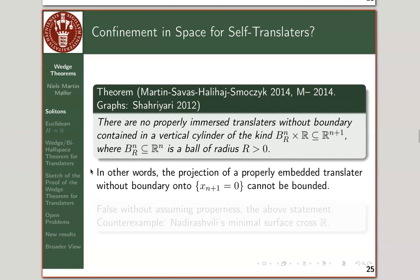Another way to reformulate this using projections: take a properly embedded translator without boundary and look at the projection in the direction of translation. That projected set cannot be a bounded set.